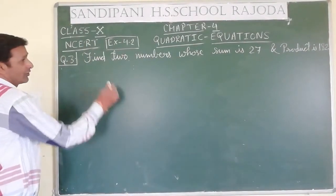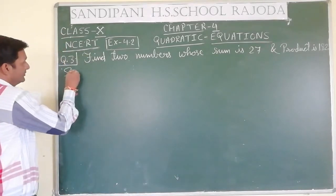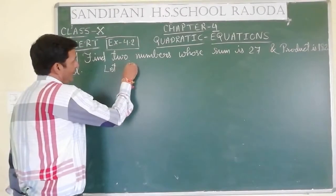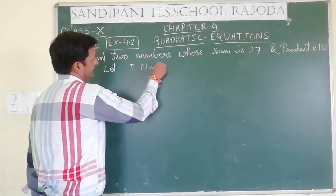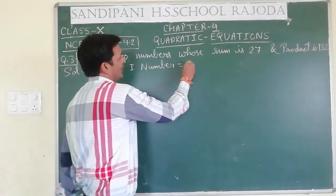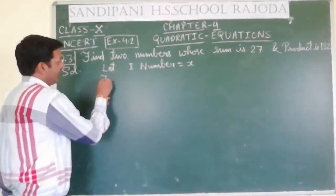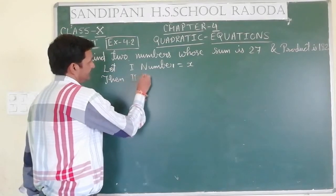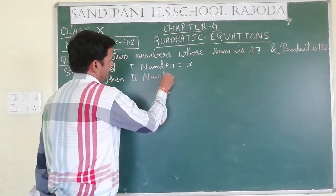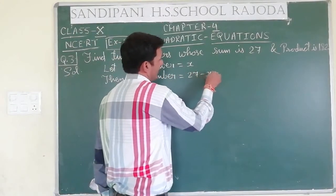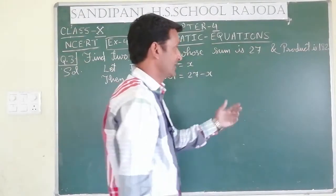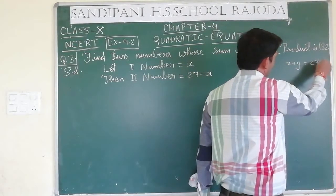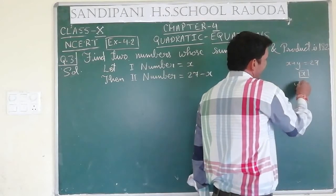In solution, let the first number be equal to x. Then the second number is equal to 27 minus x. This is clear because the sum of two numbers is 27. Suppose two numbers x and y, where x plus y equals 27; if one value is x then the other will be y, that is 27 minus x.